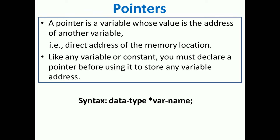The address of another variable means it is the direct address of the memory location, because whenever you declare a particular variable, some memory is allocated for it, and whatever the address of that memory is, it will be stored in the pointer variable. Like any variable or constant, the pointer must also be declared before using it in your program. The syntax is similar to declaring a simple variable — the only change is the star.